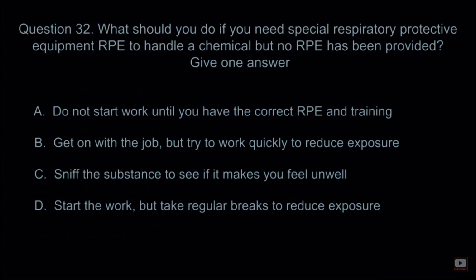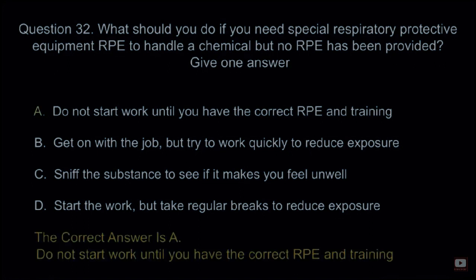Question 32: What should you do if you need special respiratory protective equipment (RPE) to handle a chemical but no RPE has been provided? Give one answer. A: Do not start work until you have the correct RPE and training. B: Get on with the job but try to work quickly to reduce exposure. C: Sniff the substance to see if it makes you feel unwell. D: Start the work but take regular breaks to reduce exposure. The correct answer is A: Do not start work until you have the correct RPE and training.